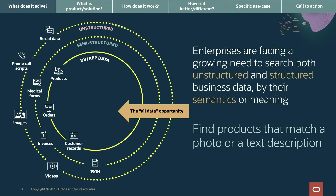Imagine searching for products matching a photo or text description, finding houses matching an uploaded style, identifying similar medical cases from imaging and patient history combined. This isn't science fiction — this is Oracle AI Vector Search today.